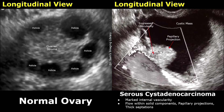Let's look at more cases of serous cystadenocarcinoma. This tumor has a cystic area which is anechoic and without any internal echoes, and a thick papillary projection with increased vascularity on Doppler. Doppler signals are noted within the papillary projection. Even though its shape is somewhat smooth, the vascularity is an alarming feature and warrants further investigation.